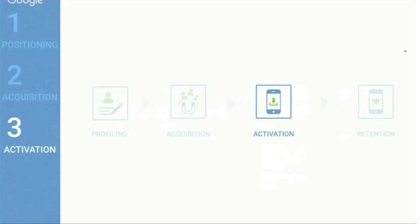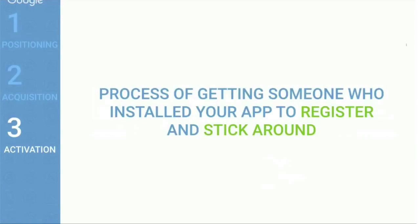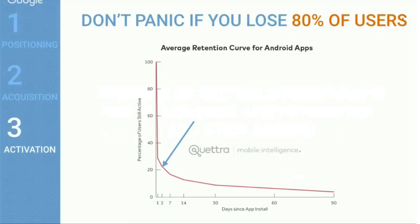Now we're at the third stage: activation. This is a widely overlooked stage that can drastically hurt your success. Activation is the process of getting someone who installed your app to register and stick around. The average app loses around 80% of its active users within only the first three days after install — and a key reason is that most app developers don't have a proper activation process in place.